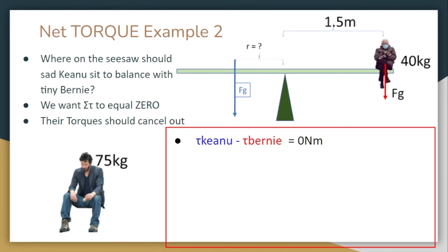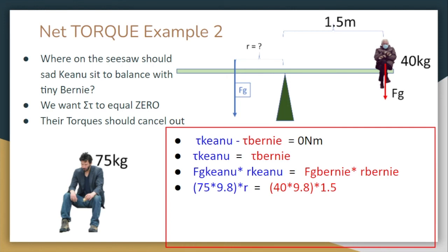Their torques, in other words, should just cancel each other out. So torque of Keanu minus torque of Bernie should equal zero, meaning that Keanu's torque should equal Bernie's torque. Since these forces are exerted perpendicular, it's just F times R of Keanu is equal to F times R of Bernie. We can plug our numbers in.